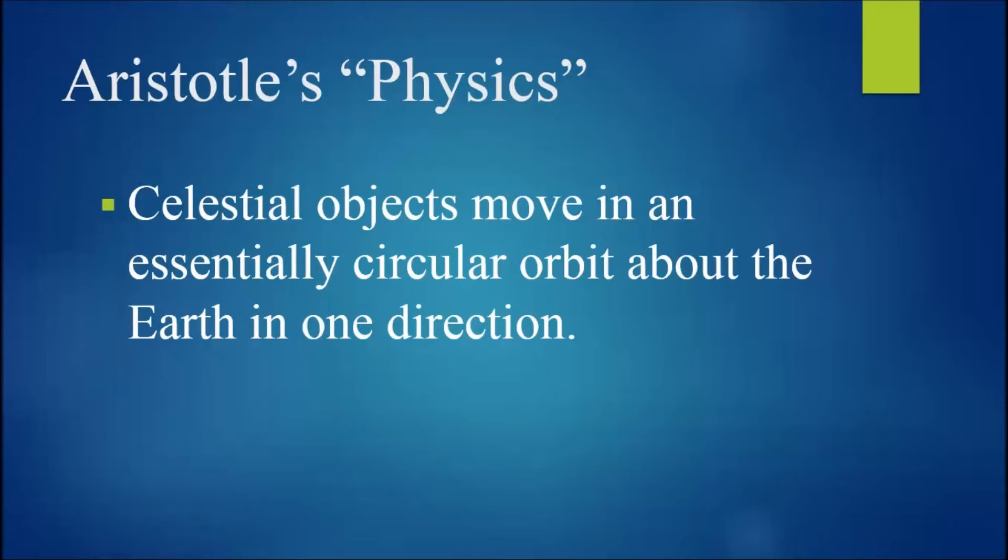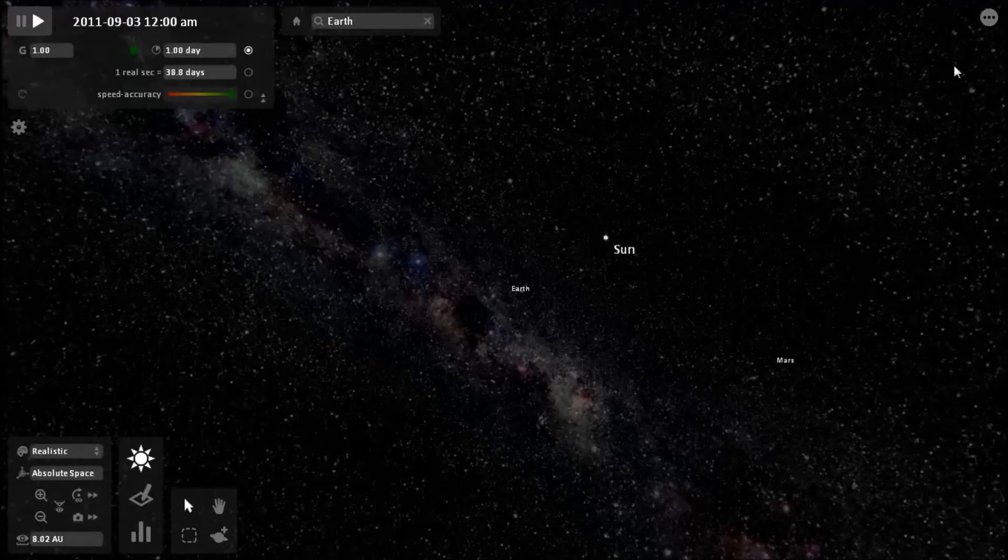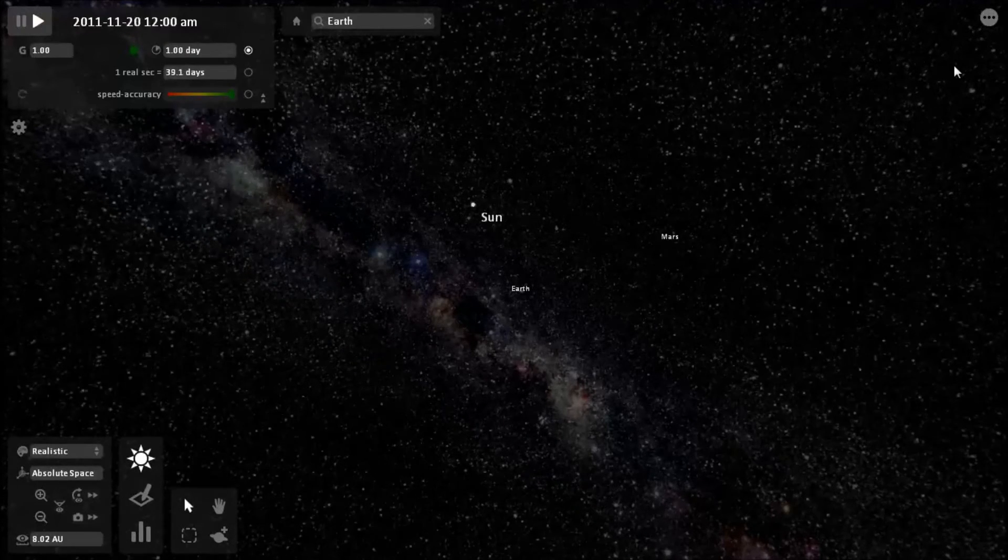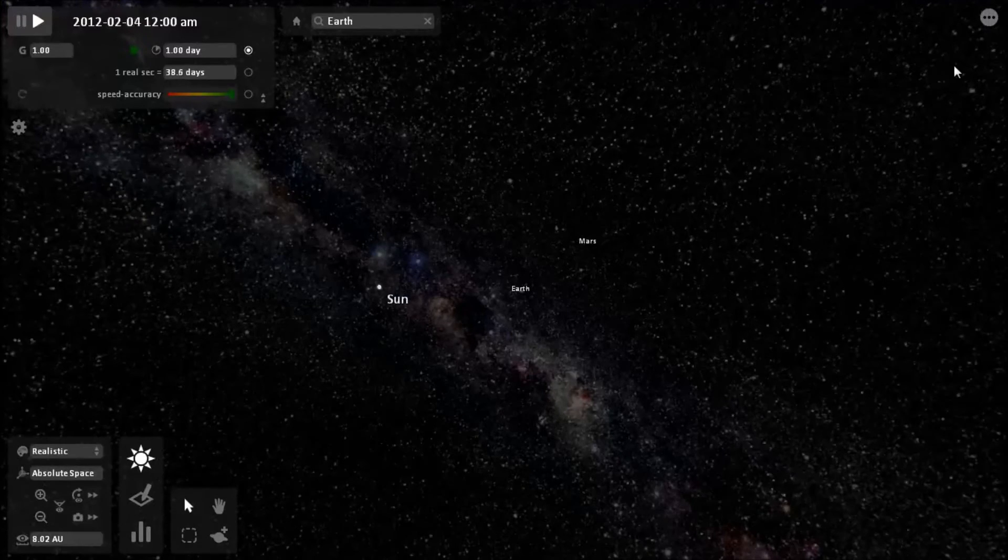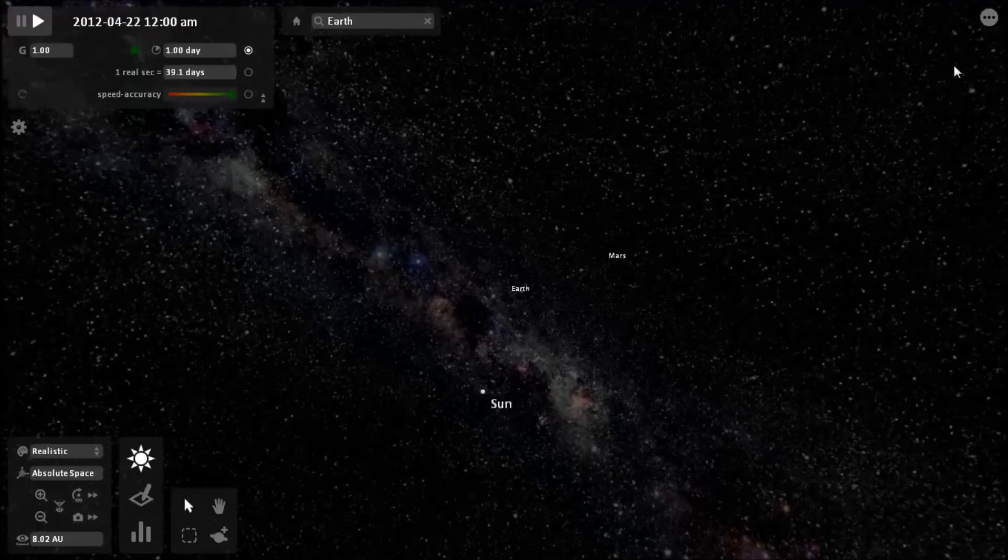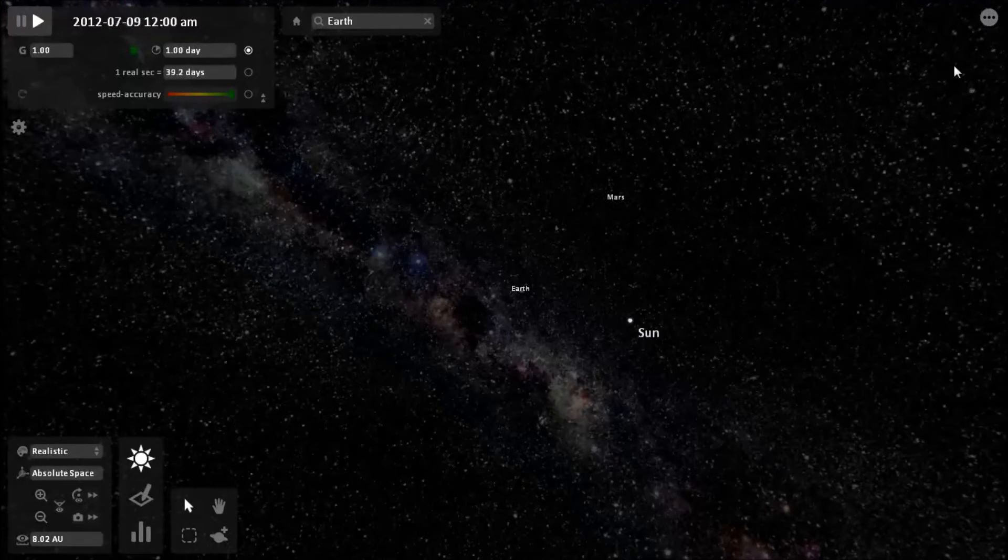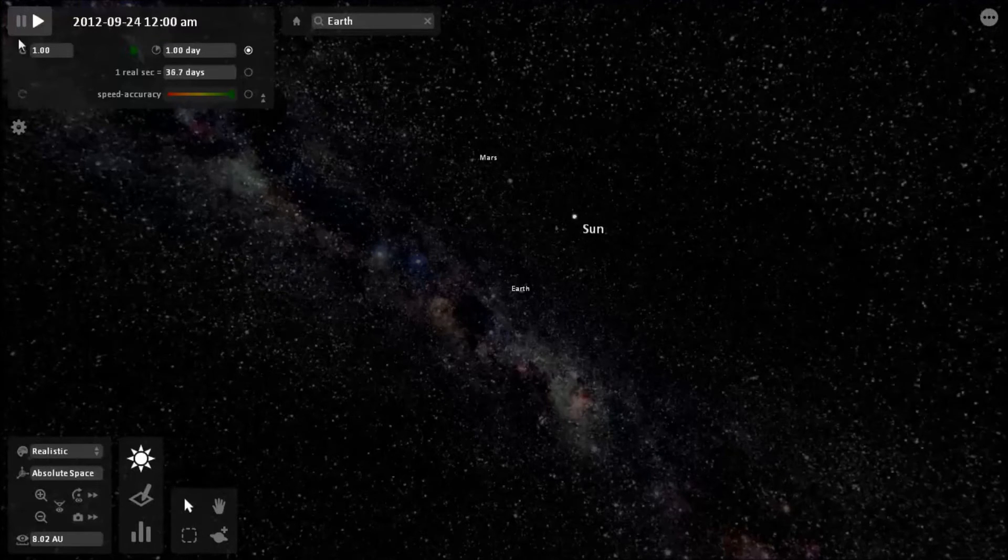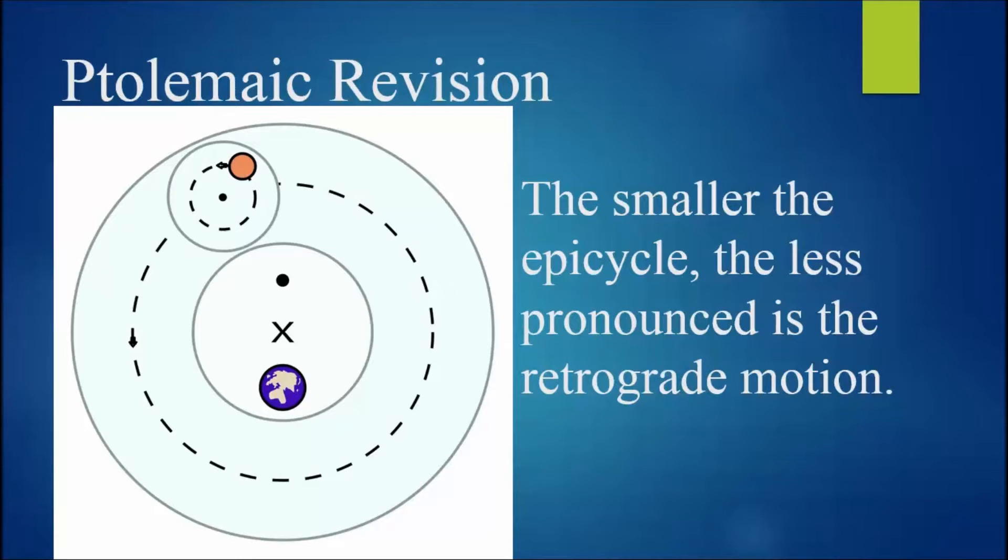Further celestial objects were thought to move in an essentially circular orbit about the earth in one direction. And then we observe the apparent retrograde motion of the planet Mars, which from the vantage point of the earth appears to change direction. To explain this away, planets were then proposed to move in epicycles on a main circular orbit about the earth, where the smaller the epicycle, the less pronounced the retrograde motion.